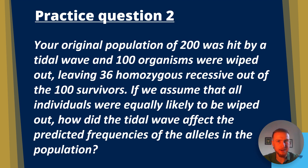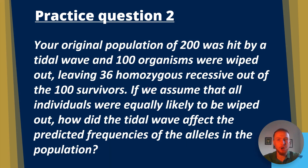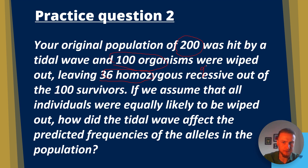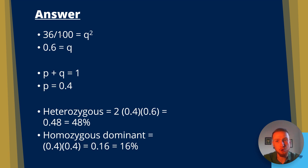Have a go at this next question on your own. An original population of 200 is hit by a tidal wave; 100 are wiped out, leaving 36 homozygous recessive individuals out of 100 survivors. Assuming all individuals were equally likely to be wiped out, how did the tidal wave affect the allele frequencies? 36 out of 100 are homozygous recessive, so Q squared equals 0.36.